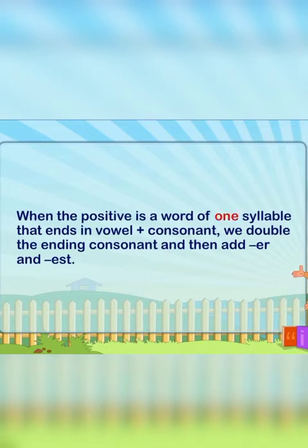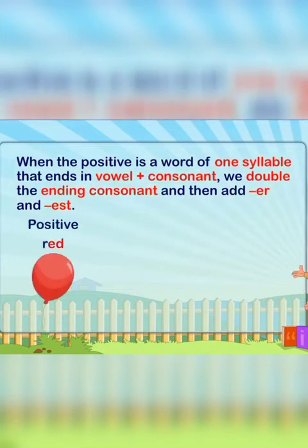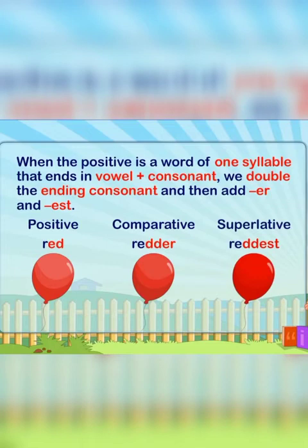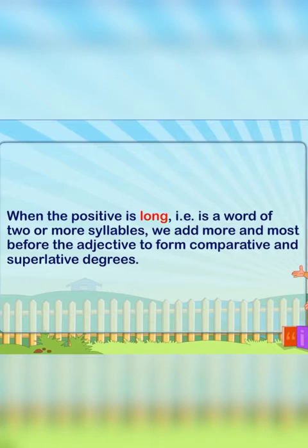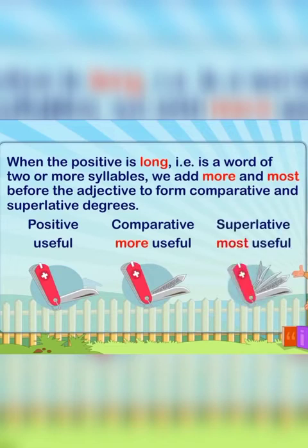When the positive is a word of one syllable that ends in a vowel plus consonant, we double the ending consonant and then add -er and -est. When the positive is a word of two or more syllables, we add more and most before the adjective to form the comparative and superlative. For example: useful, more useful, most useful.